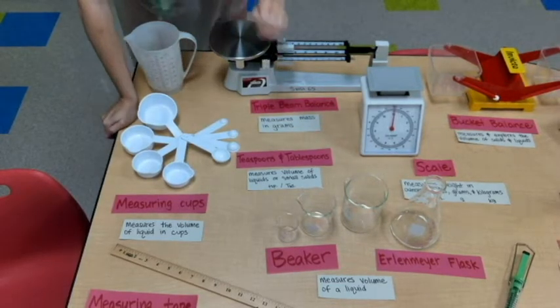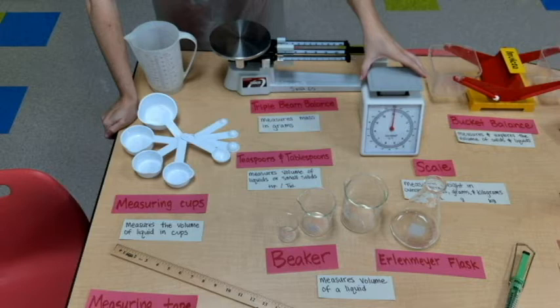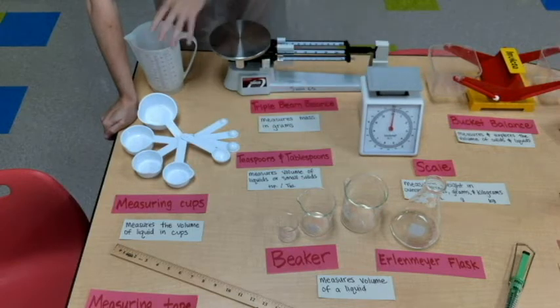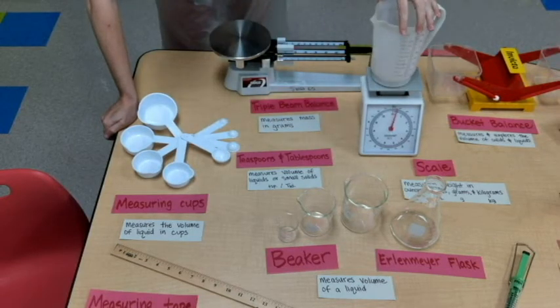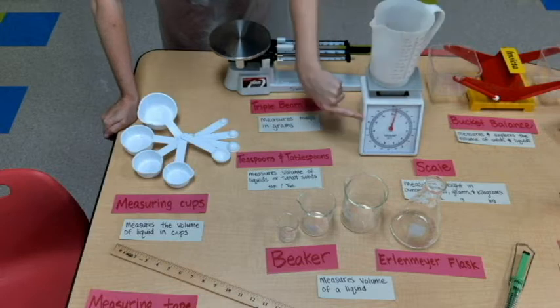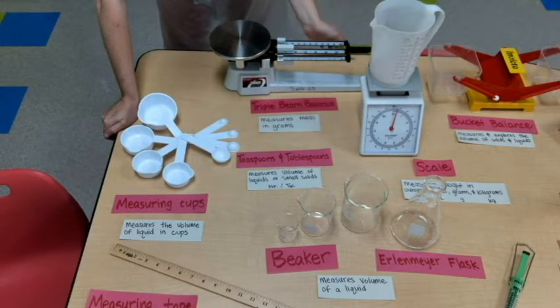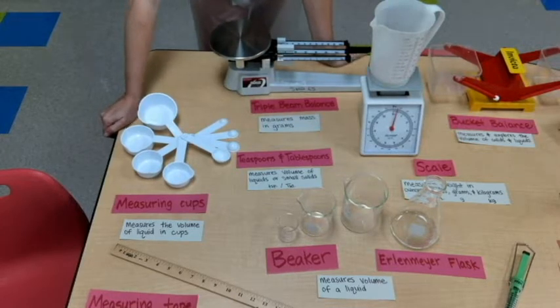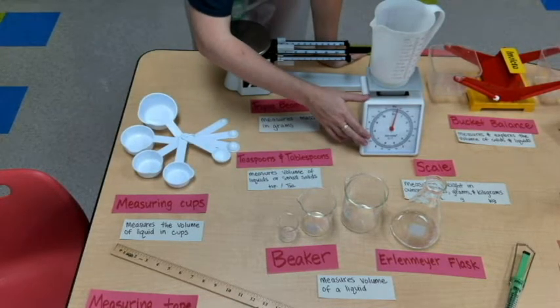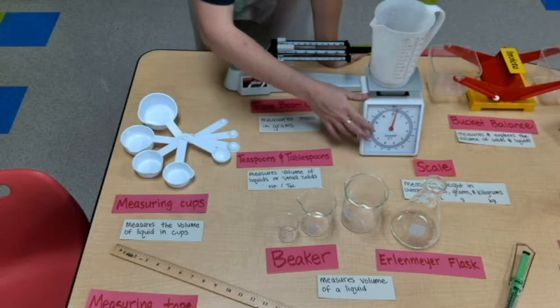Right here we have a scale. Like I mentioned, you place an item on top of the scale, and then you go to the front and you look at the dial, and you see how many ounces versus how many pounds, or how many grams versus kilograms.